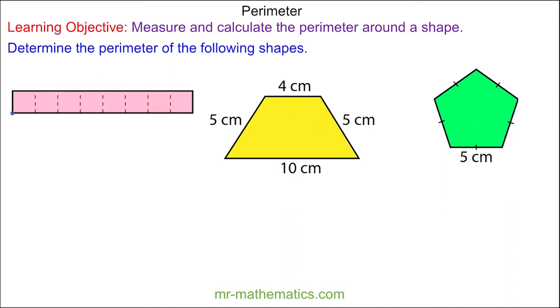We can start here and as we work around the shape we have 1, 2, 3, 4, 5, 6, 7, 8, 9, 10, 11, 12, 13, 14, 15, 16, 17, and 18 units. So the perimeter of this rectangle is 18 units.